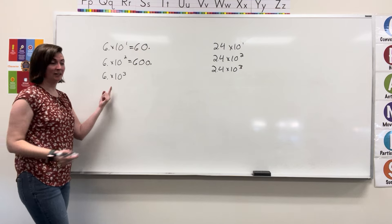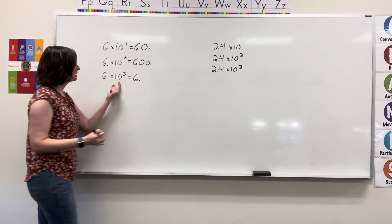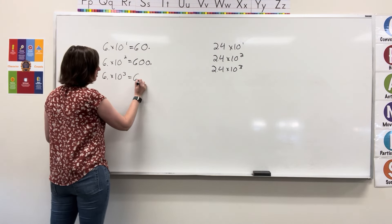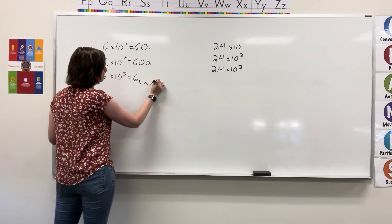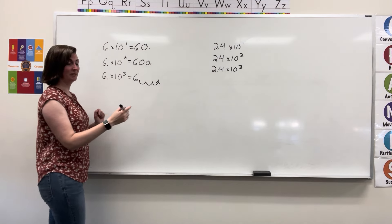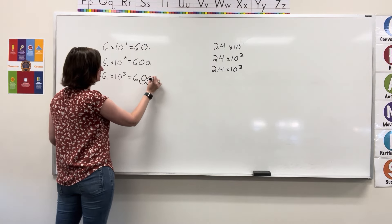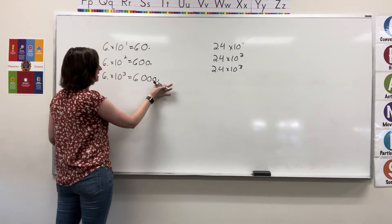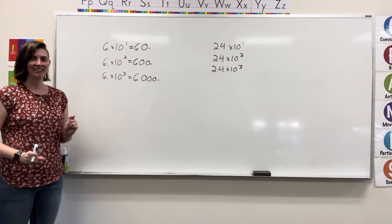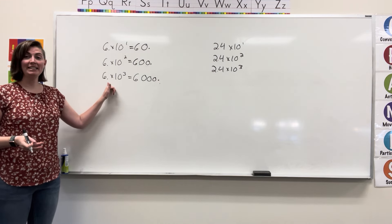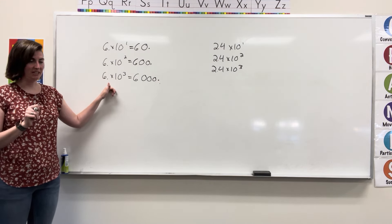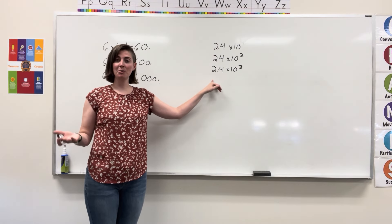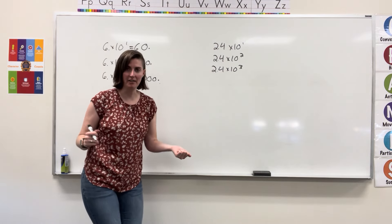Same thing here. Now, that one we had to add in a secret decimal that's always there. In this one, we already have the decimal, so we don't have to add any secret decimals in. It's already there.